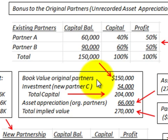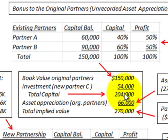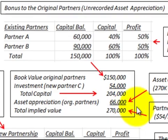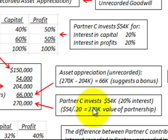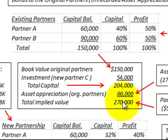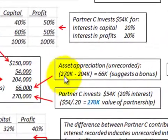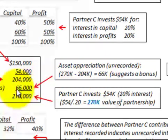The book value of the original partners is $150,000, and the new partner's investment is $54,000, so the total capital is going to be $204,000 after the new partner is admitted. Now let's look at the implied value of the partnership based on Partner C's investment. They make a $54,000 investment for a 20% interest, so $54,000 divided by 20% gives us a $270,000 implied value for the partnership.